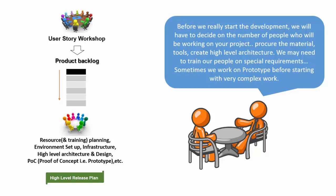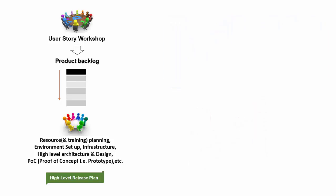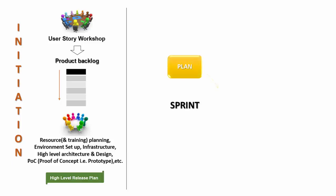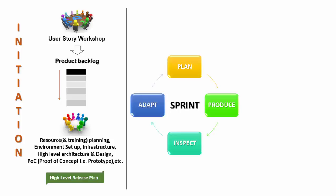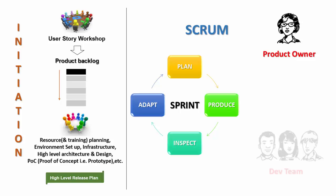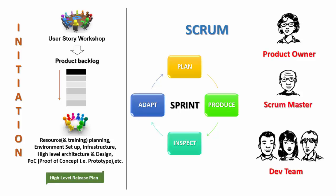We may need to train our people on special requirements too. Sometimes we work on a prototype before starting very complex work. All these activities are under the first phase called the initiation phase or Sprint Zero. After that, we can start with the first iteration — Sprint 1. The execution methodology is called Scrum. You, being the owner of the product, your role will be Product Owner. I will be leading the team as Scrum Master.